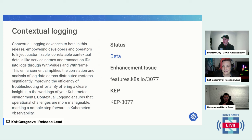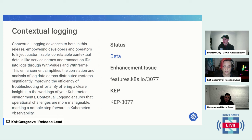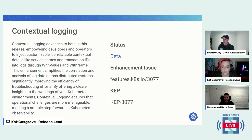Contextual logging is one that a lot of people were really excited about. Contextual logging advances to beta in this release, empowering developers and operators to inject customizable, correlatable contextual details — like service names and transaction IDs — into logs through WithValues and WithName. This enhancement simplifies the correlation and analysis of log data across distributed systems, significantly improving troubleshooting efficiency and marking a notable step forward in Kubernetes observability.